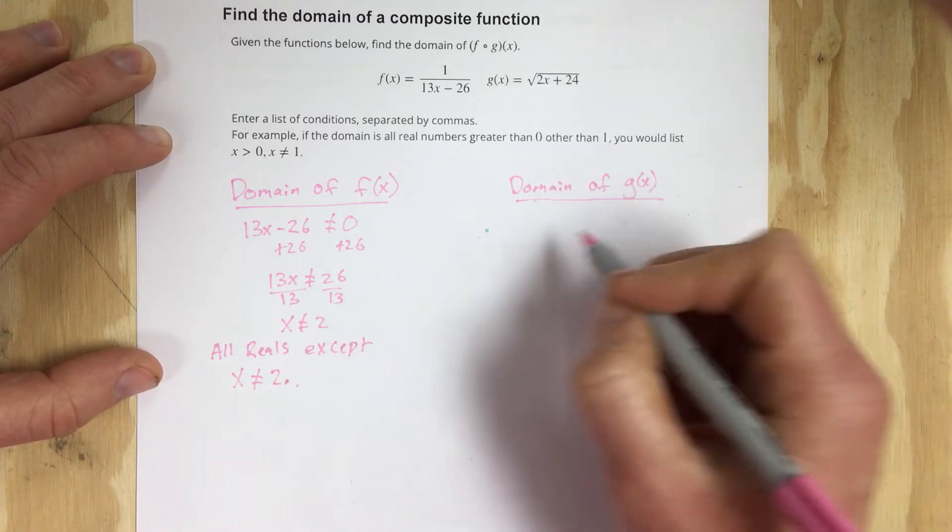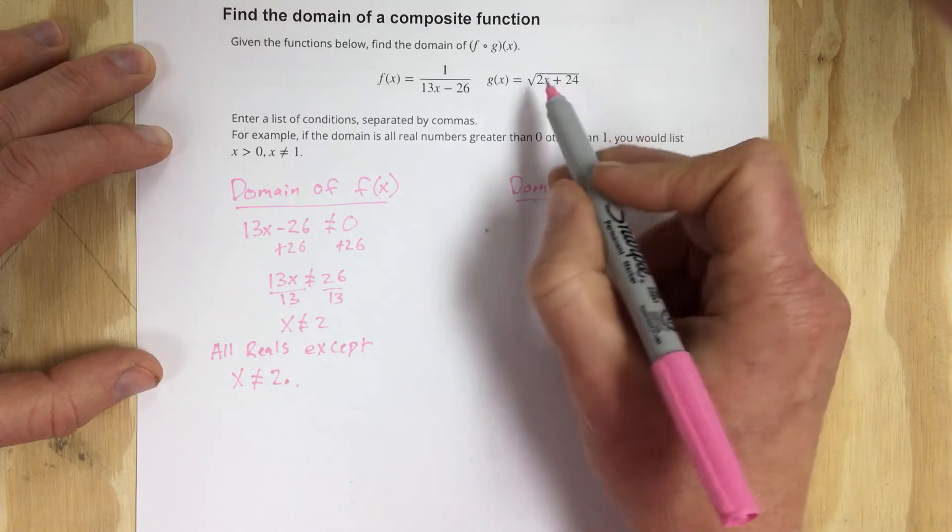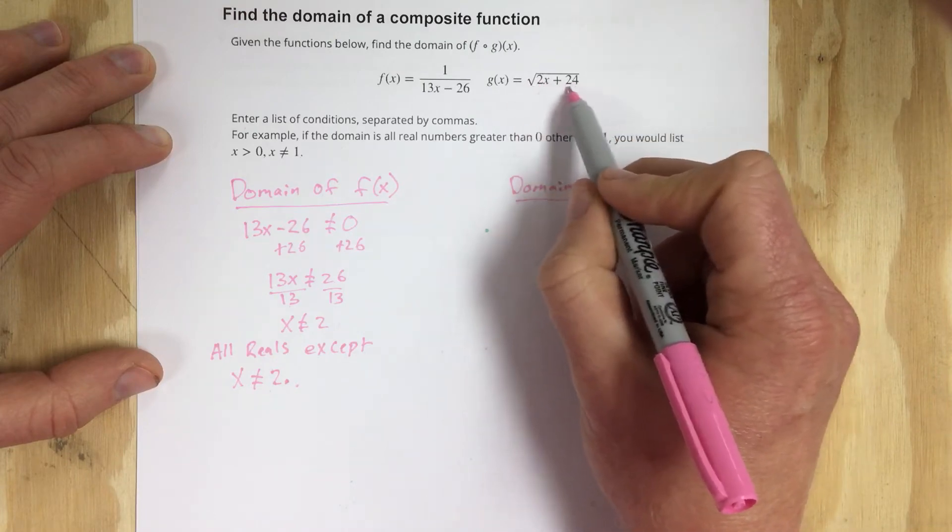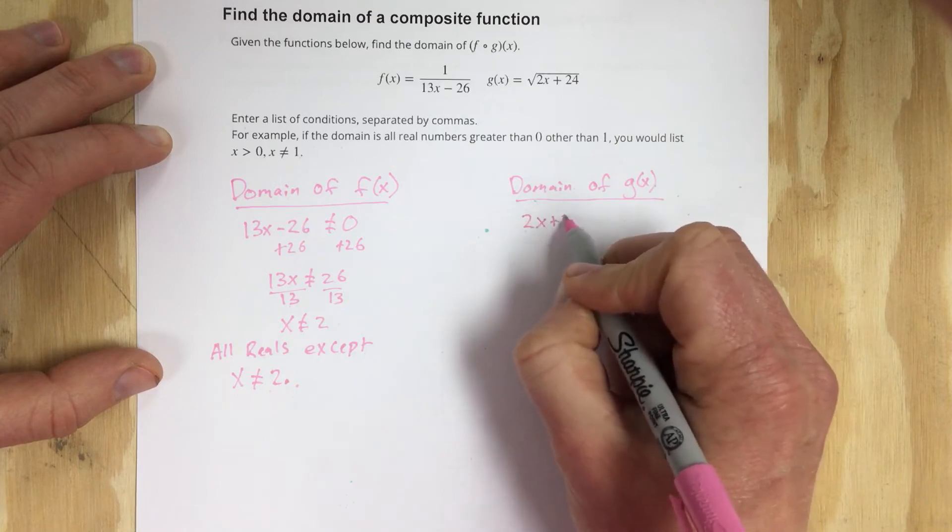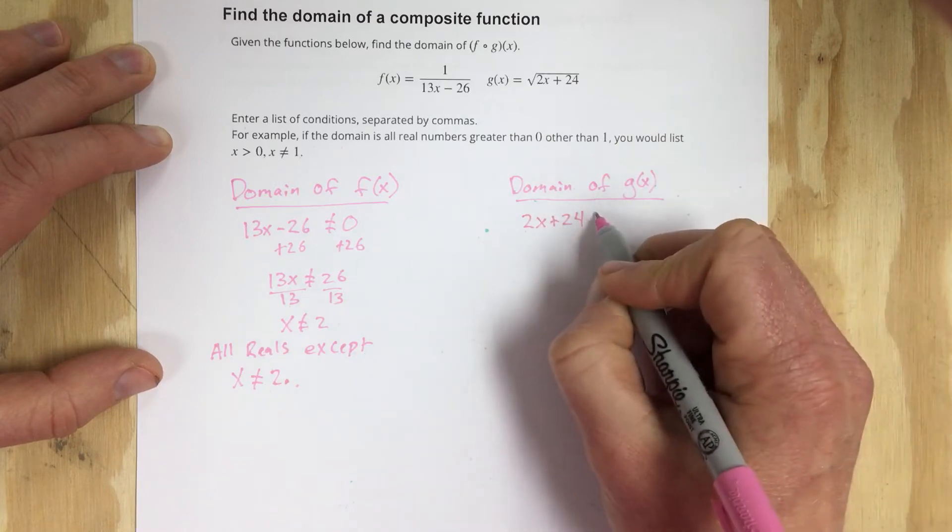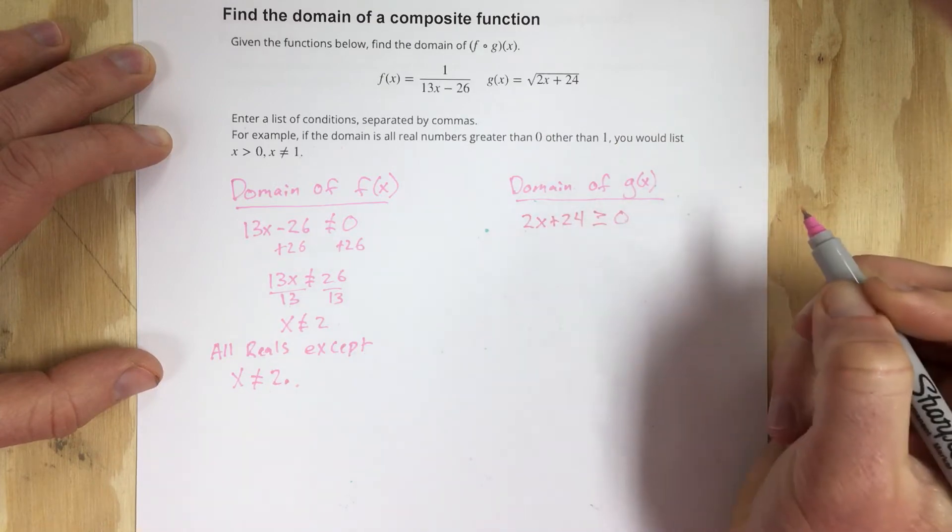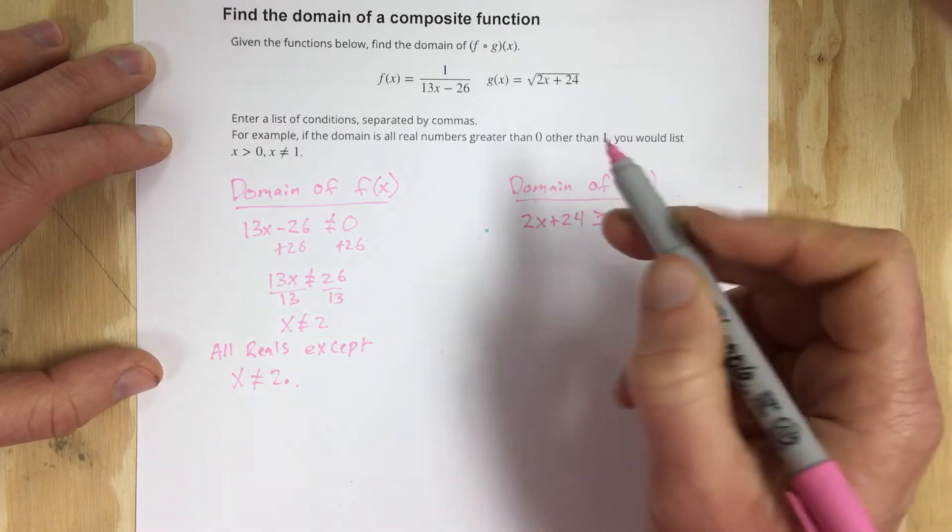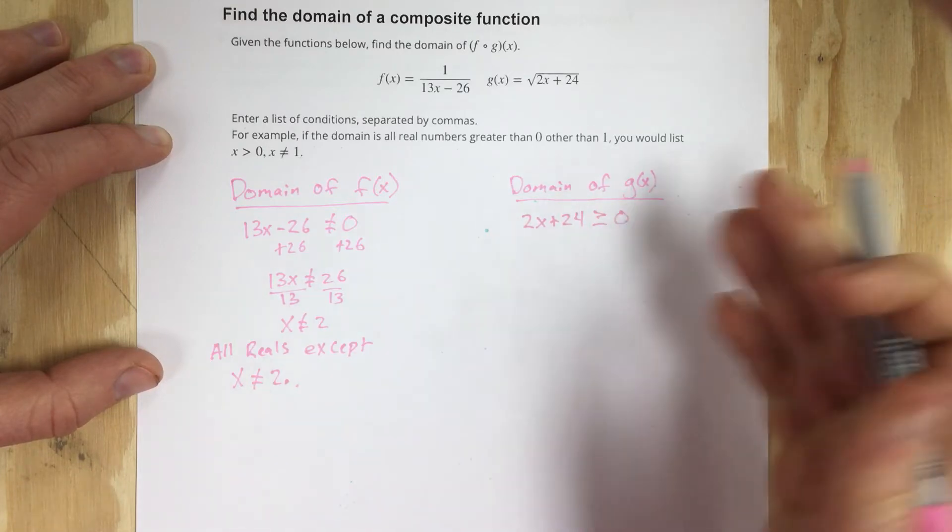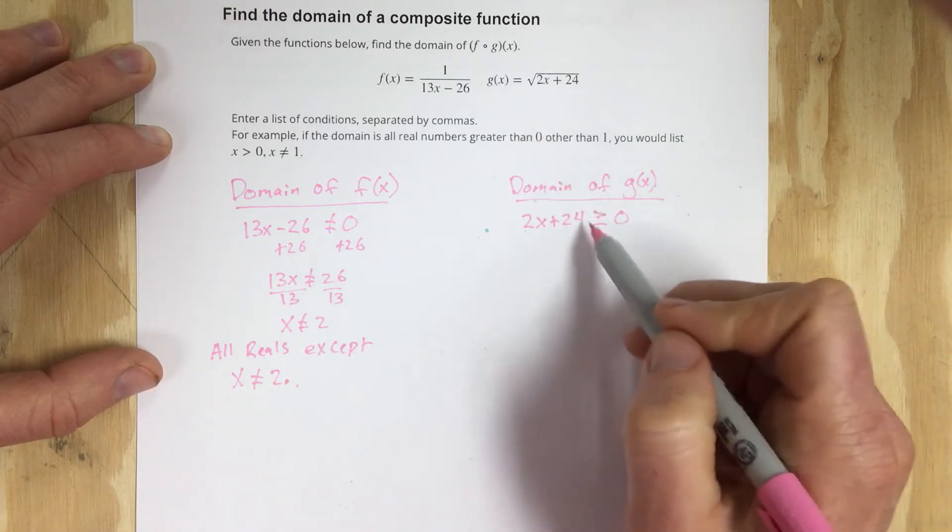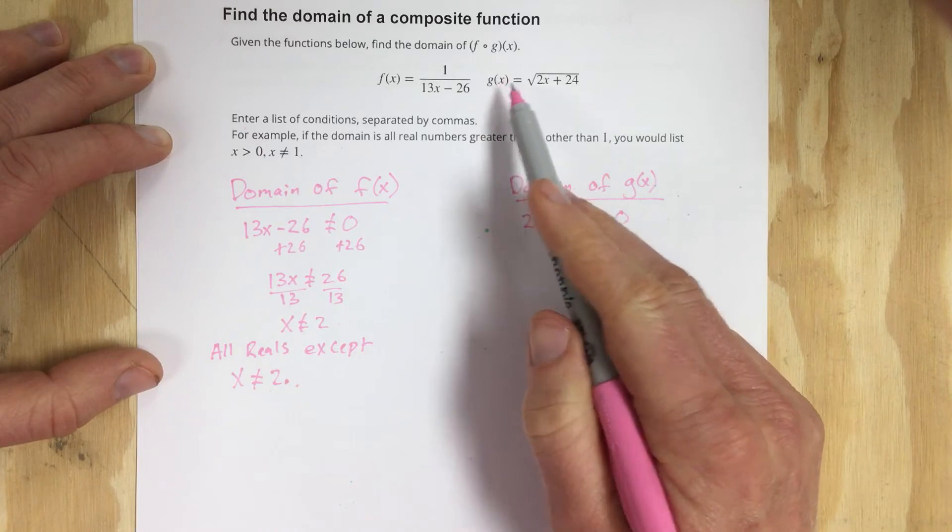Let's find the domain of g of x. We would say that we can't take the square root of a negative, so we need to make sure that 2x plus 24 is greater than or equal to 0. So basically what we're doing is we're finding the x value, the lowest x value that will work for this g function.